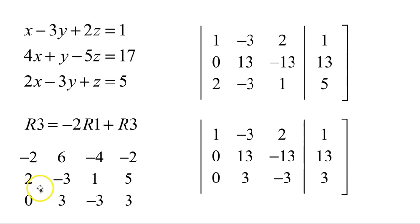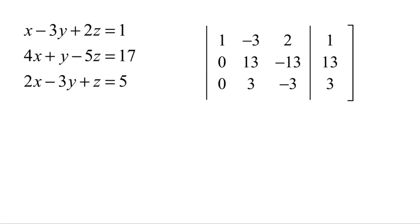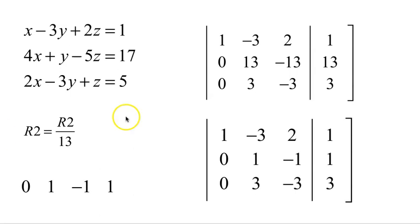So we have 1 on the upper left, 0 underneath, 0 underneath. And then here, this has to become a 1. So I need to divide that entire row by 13. Row 2 is the old row 2 divided by 13: 0 divided by 13 is 0, 13 divided by 13 is 1, negative 13 divided by 13 is negative 1, 13 divided by 13 is 1. This becomes my new row 2.